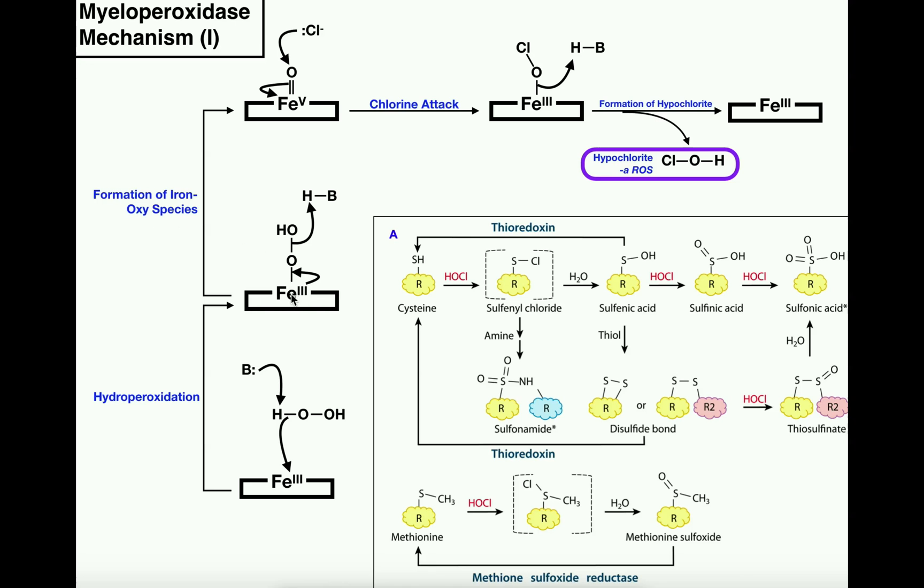When that happens this iron is going to go up to oxidation state 5 plus charge, but in doing so this OH is going to be lost as a leaving group, in which case it's going to pick up this proton that was just abstracted in this first step and form water. If you look at the reaction of myeloperoxidase it'll give you hydrogen peroxide as a substrate and water as a product.